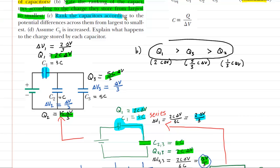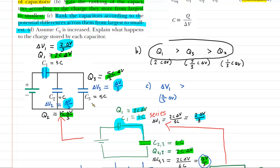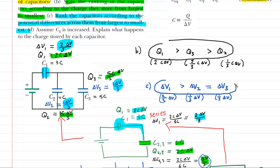Now part C: rank the capacitors according to the potential difference across them from largest to smallest. The potential difference for C1 is 2·delta V/3, for C2 it is delta V/3, and for C3 it is also delta V/3. The largest potential difference is across capacitor 1 at two-thirds delta V, which is greater than the potential difference across capacitors 2 and 3, both at one-third delta V. So C1 > C2 = C3.